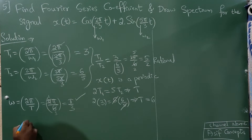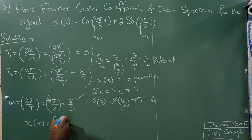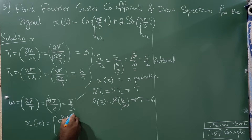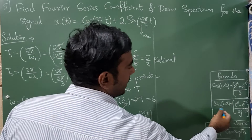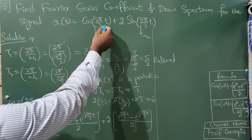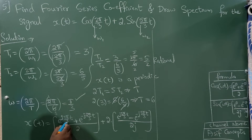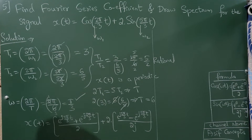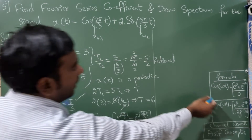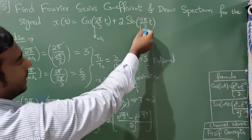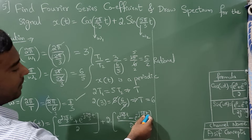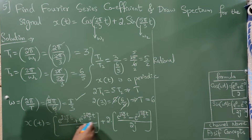Using the Euler formulas — cos(θ) = (e^(jθ) + e^(-jθ))/2 and sin(θ) = (e^(jθ) − e^(-jθ))/(2j) — the given equation becomes: [e^(j·2π/3·t) + e^(-j·2π/3·t)]/2 + 2·[e^(j·5π/3·t) − e^(-j·5π/3·t)]/(2j).